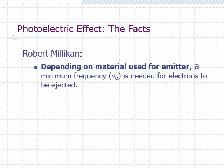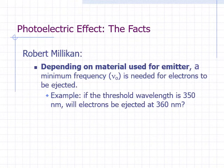Millikan also found that, depending on the material used by the emitter, there is a minimum frequency needed for photoelectrons to be produced. We use the symbol ν₀ to represent this threshold frequency. For example, suppose the threshold wavelength is 350 nm. Would you expect electrons to be ejected at 360 nm?